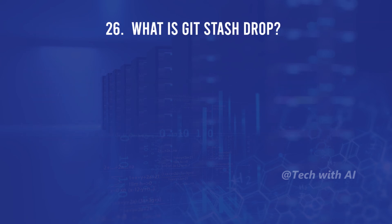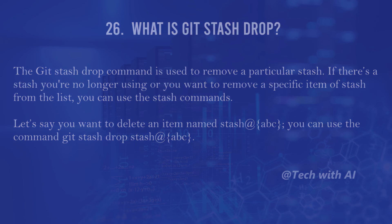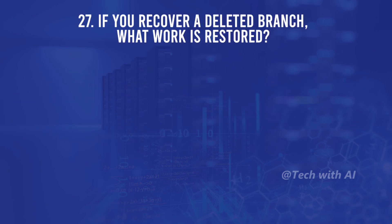What is git stash drop? The git stash drop command is used to remove a particular stash. If there is a stash you are no longer using or you want to remove a specific item from the stash list, you can use the stash commands. For example, to delete an item named stash@{abc}, you can use the command: git stash drop stash@{abc}.